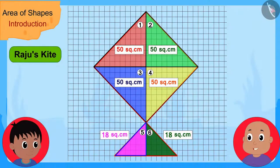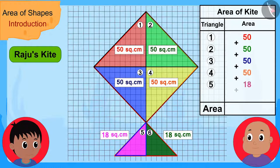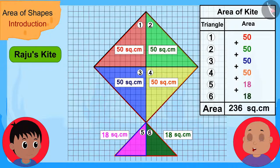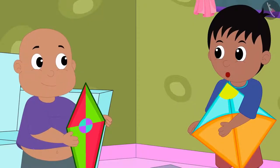"Now, finally, we just have to add the area of all these triangles and we will know the area of your kite. In this way, the area of your kite is 236 square centimetres," Bablu explained to Raju. Raju responded, "Oh wow Bablu! This is a very easy process."